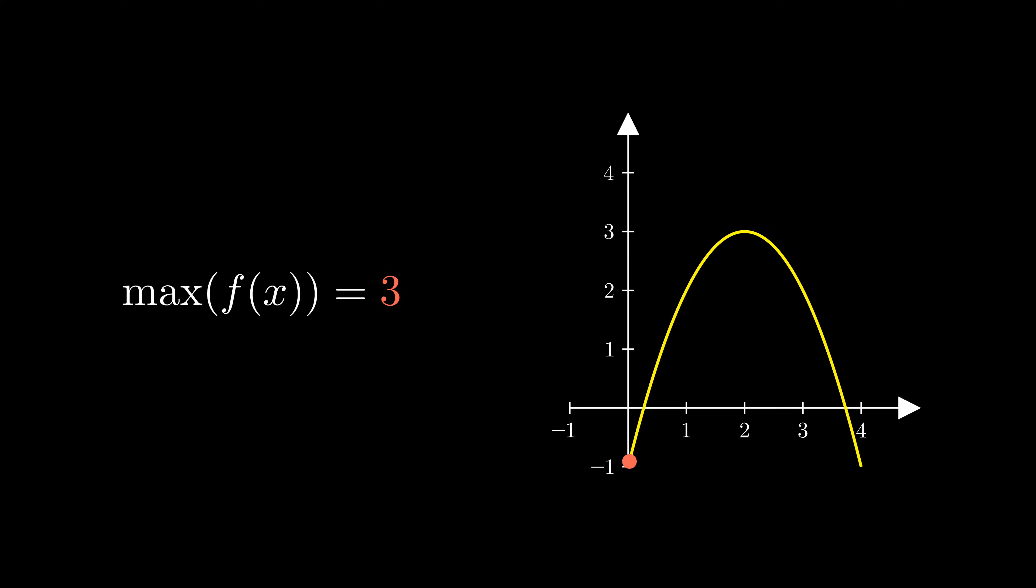Max will return the maximum output variable that can be achieved with that function, which is 3. There is also argmax, which does the same thing, except it finds the input variables that achieves that maximum output variable. There are minimum counterparts as well.